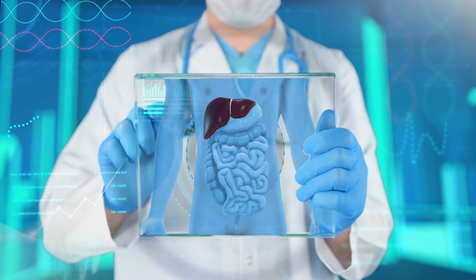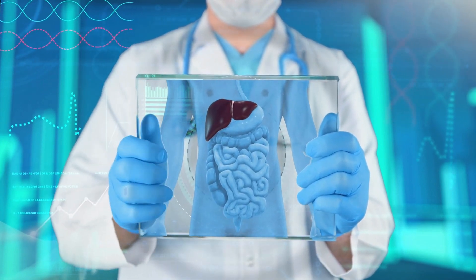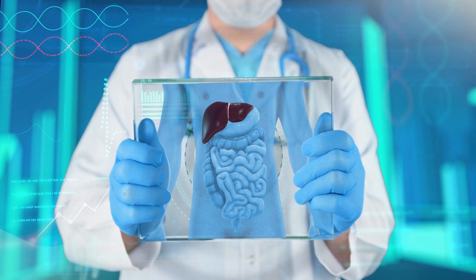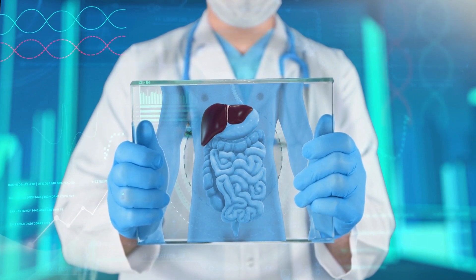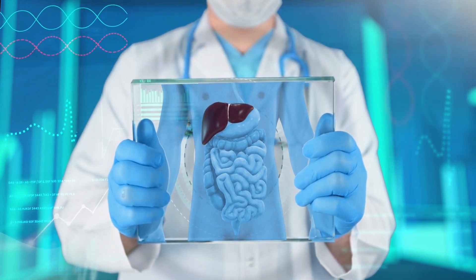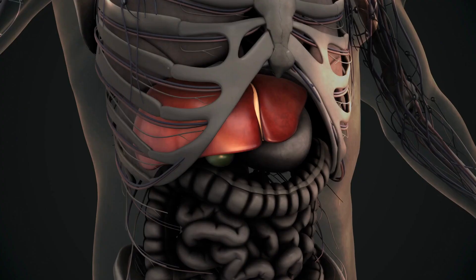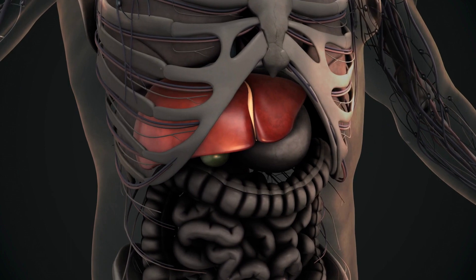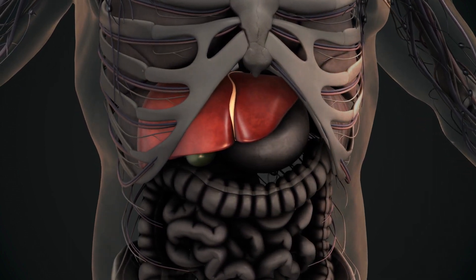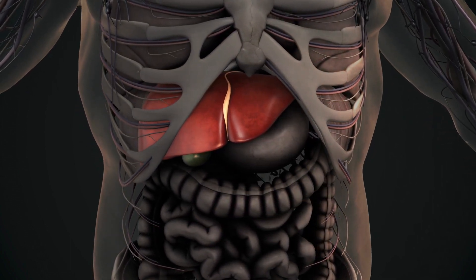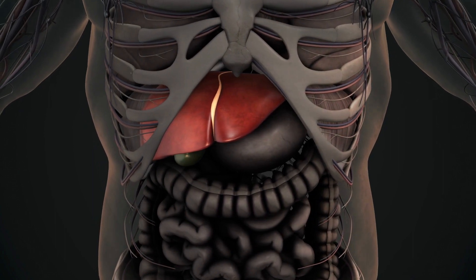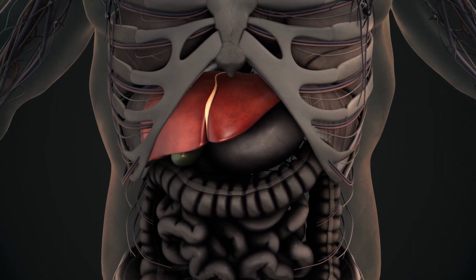The liver is the largest internal organ and second largest organ of the human body, weighing approximately 1.5 kg, and has a variety of functions (RAD, 2020). The different functions of the liver are discussed below.